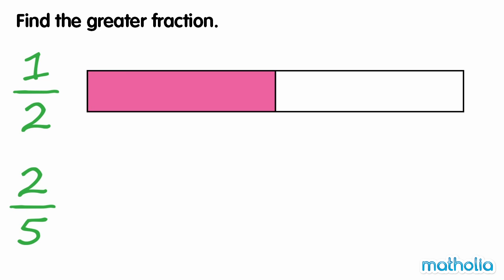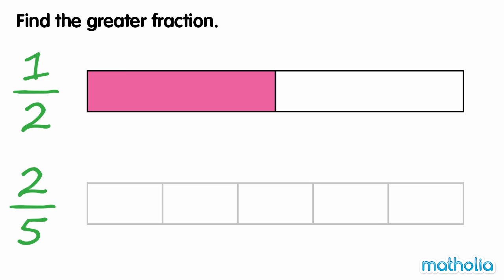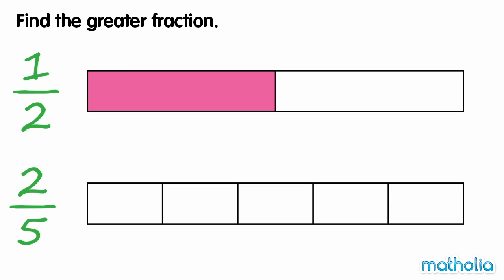We can show two-fifths by drawing a rectangle of the same size, dividing it into five parts and colouring two parts. We can see that the rectangle showing one-half has more colour than the rectangle showing two-fifths. So one-half is the greater fraction.